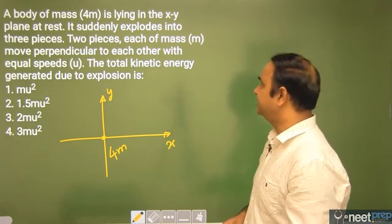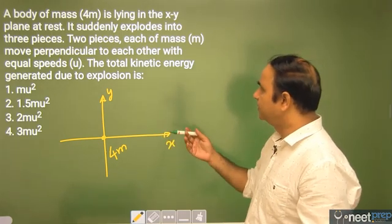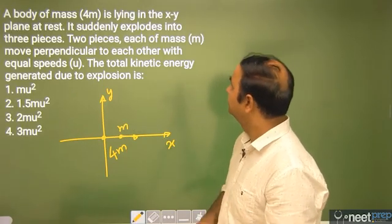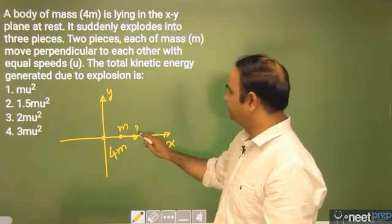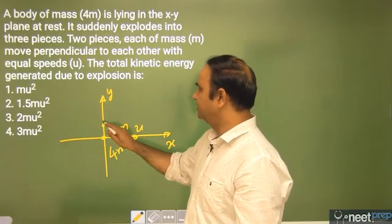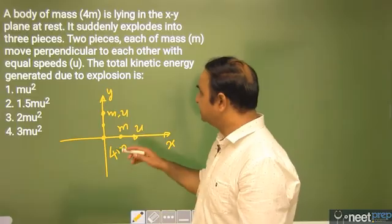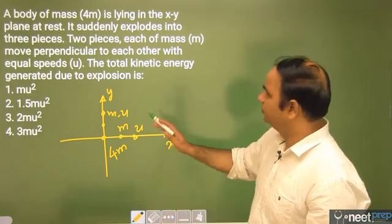Suddenly it explodes into three pieces. Two pieces each of mass m move perpendicular to each other. One mass m started moving in this direction, another particle of mass m started moving in this direction with equal speed u.